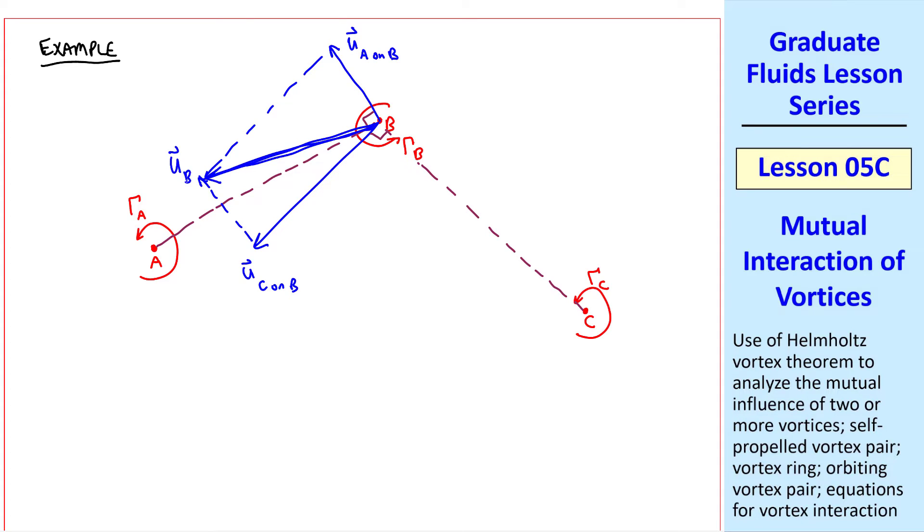To get the resultant velocity vector, we complete the parallelogram, and the resultant will be the velocity of B. Some trig would be involved, but if you know the locations of these three vortices, you can calculate this r and this r, and therefore these two velocities, both magnitude and direction, and then take the resultant.